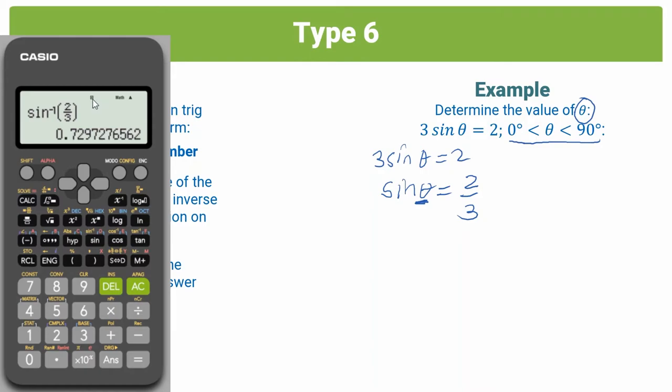Before there was an R there on the right. Now there's a D. And now if you press equals, you can see how that answer changes. And the answer you're getting now is in degrees, which is what we want.